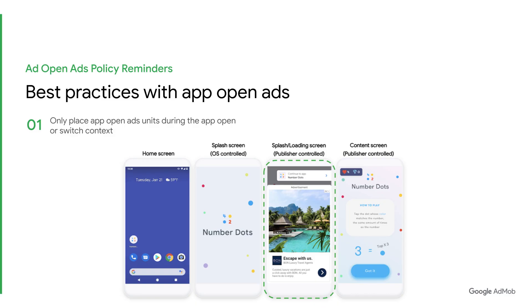Now that we've covered the implementation best practices, let's run through some important policy reminders to help you stay compliant. First, your AppOpen units should only appear when the user opens or switches back to your app.